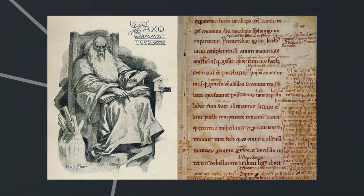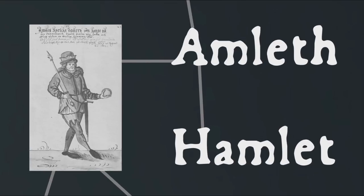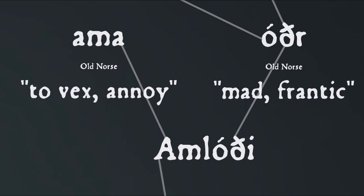Speaking of Hamlet, the legendary story is recounted in a number of different versions, most importantly in the Danish writer Saxo Grammaticus' Gesta Danorum, or Deeds of the Danes, in which the name Hamlet appears as Amleth, or actually Amlethus in the Latin. As I mentioned before, this name is not related to the word hamlet meaning little village. The traditional interpretation of the name, based on the elements of the Old Norse Amlothi, is that it is composed of amma, to vex or annoy, and Oðr, mad or frantic, and this obviously reflects the character of Hamlet feigning madness in order to avenge the death of his father who was killed by his uncle who married his widowed mother.